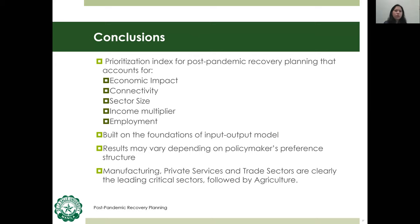To conclude, the SCI is a prioritization index for post-pandemic recovery planning that accounts for five components: economic impact, connectivity, sector size, income multiplier, and employment. These measures are based on the input-output model, ensuring theoretical soundness and capturing interdependence between economic sectors. Results may vary depending on policymakers' preference structure. However, major takeaways are that manufacturing, private services, and trade sectors are clearly the leading critical sectors, followed by agriculture, even accounting for variations.